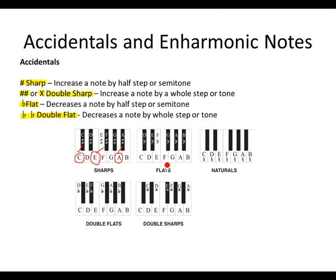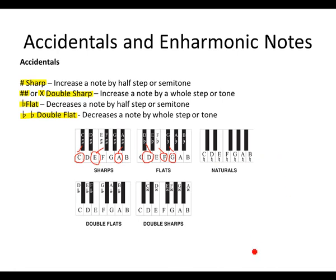We also know about the flat: if we move from D down a half step, we land on D flat; or from G, if we move down a half step, we land on G flat. Another interesting case is that if we move from F down a half step, we get F flat — because sometimes E might not be part of the triad or the scale. We also know about natural accidentals — all the white keys on the keyboard are natural.